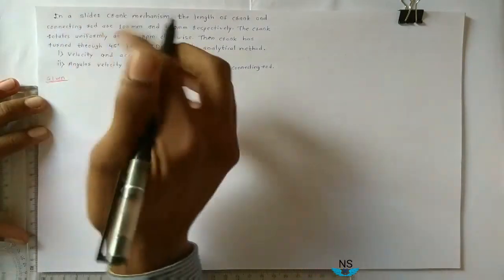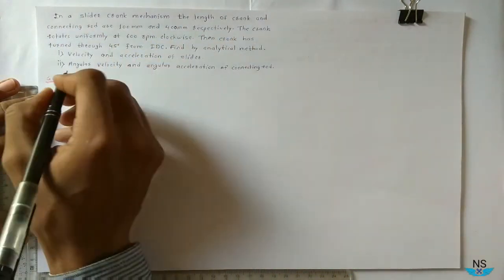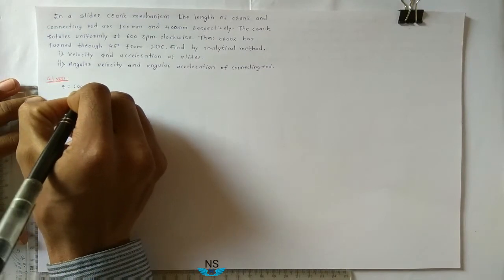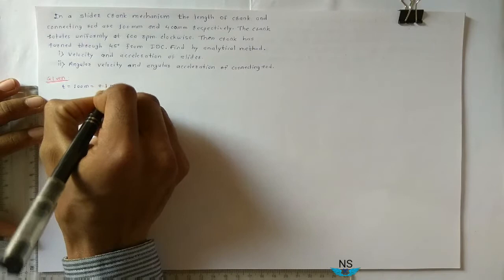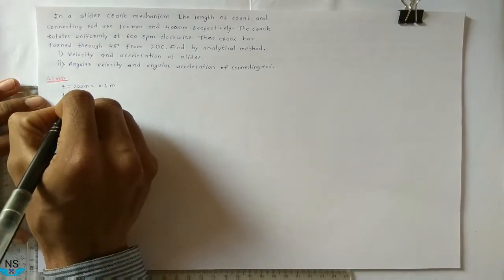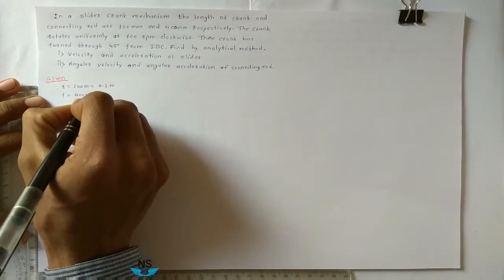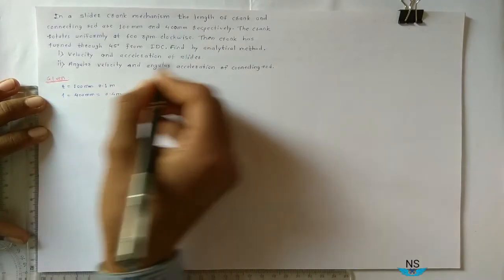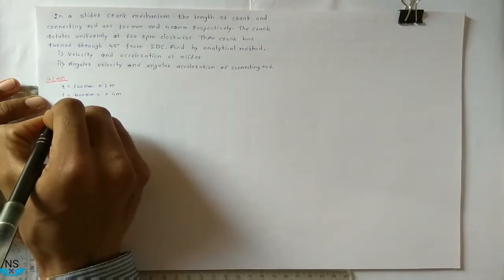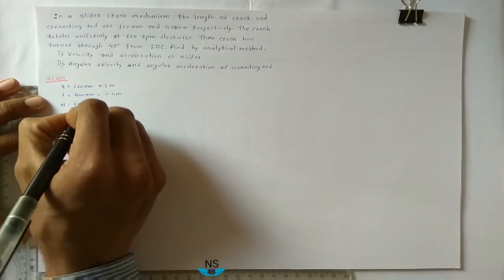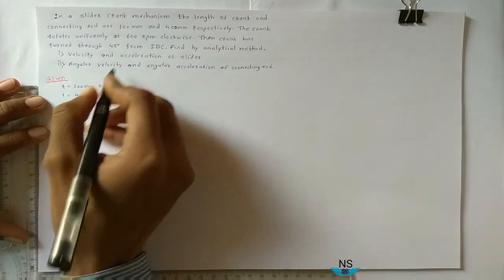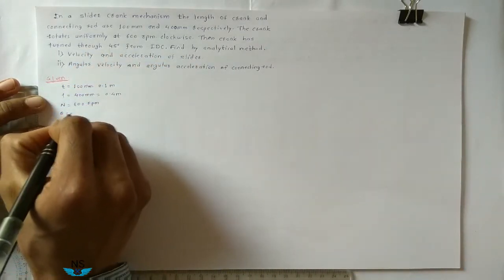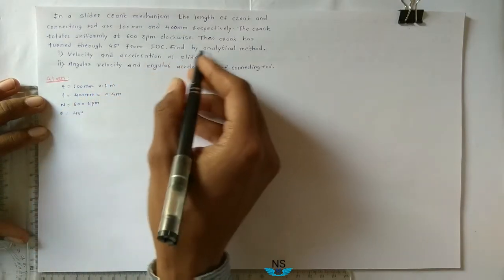Given: slider crank mechanism. The length of crank R is given as 100 mm, that is equal to 0.1 meter. L is given as 400 mm, that is equal to 0.4 meter. The crank rotates uniformly at speed N equal to 600 rpm clockwise. Crank has turned through theta equal to 45 degrees from IDC.